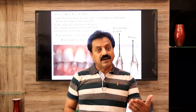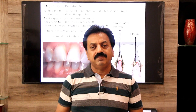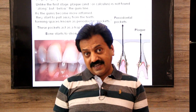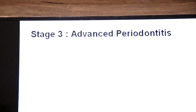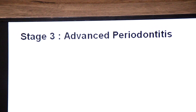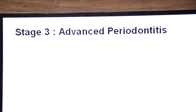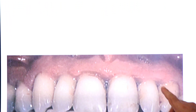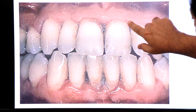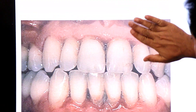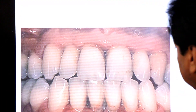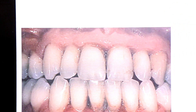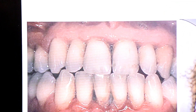If the early stage is not treated, it advances to the third stage: advanced periodontitis. Here the gums are pulled even further away, the pockets get bigger, and deep infection becomes more severe.